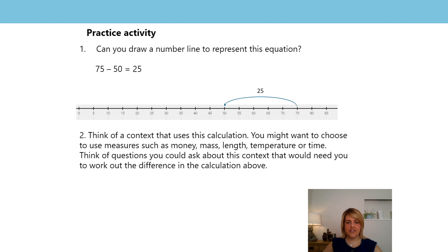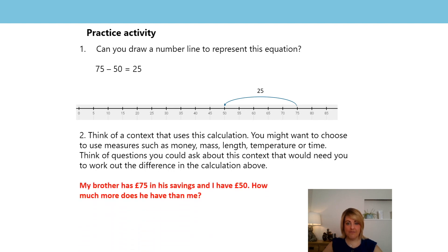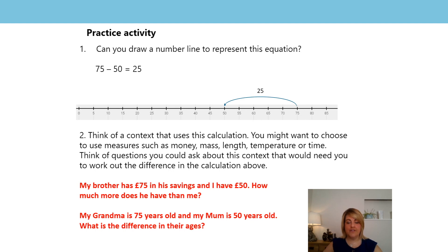We were then asked to think of a context that uses this calculation. Mr Whitehead suggested that we use measure or money, mass, length, temperature or time, and we had to think about some questions we could ask about this context where you would need to find out the difference. Here are two of the ones that I thought of. My brother has £75 in his savings and I have £50 — how much more does he have than me? Here we would have to find out the difference between 75 and 50, which is 25. My second example was: my grandma is 75 years old and my mum is 50 years old. What is the difference in their ages? Again, to find the difference we could do 75 subtract 50 to get 25.